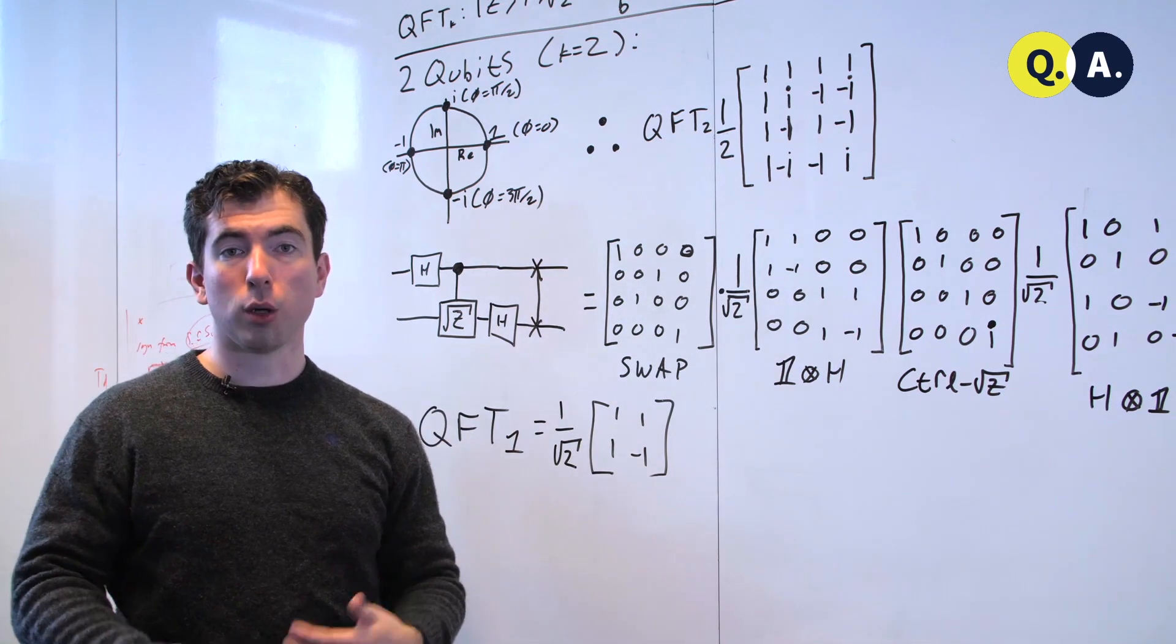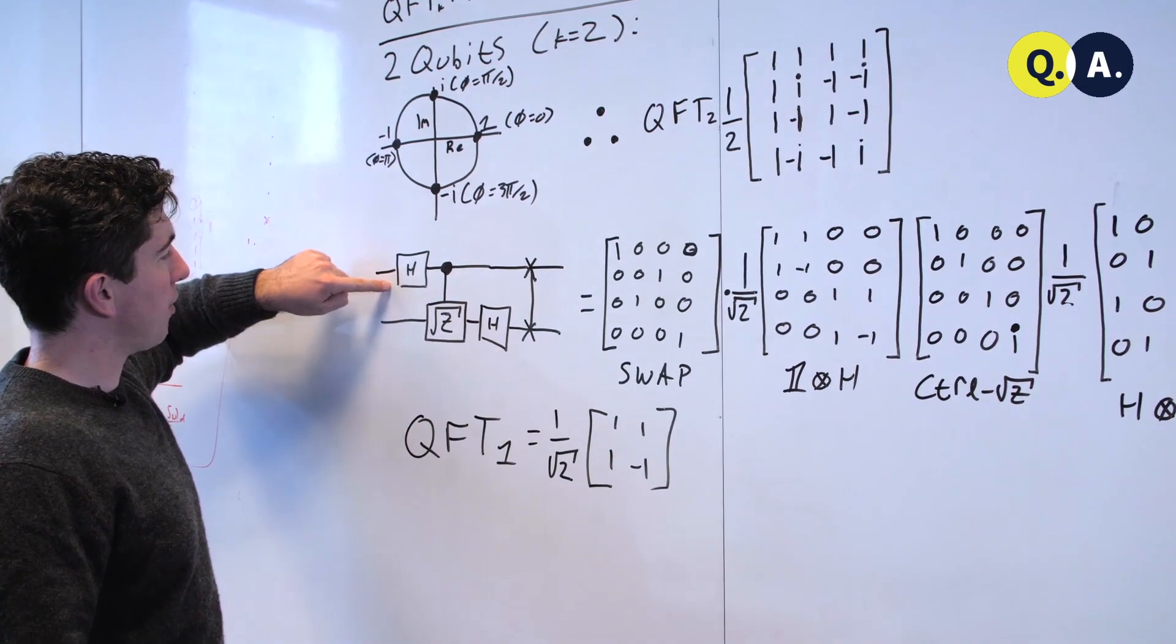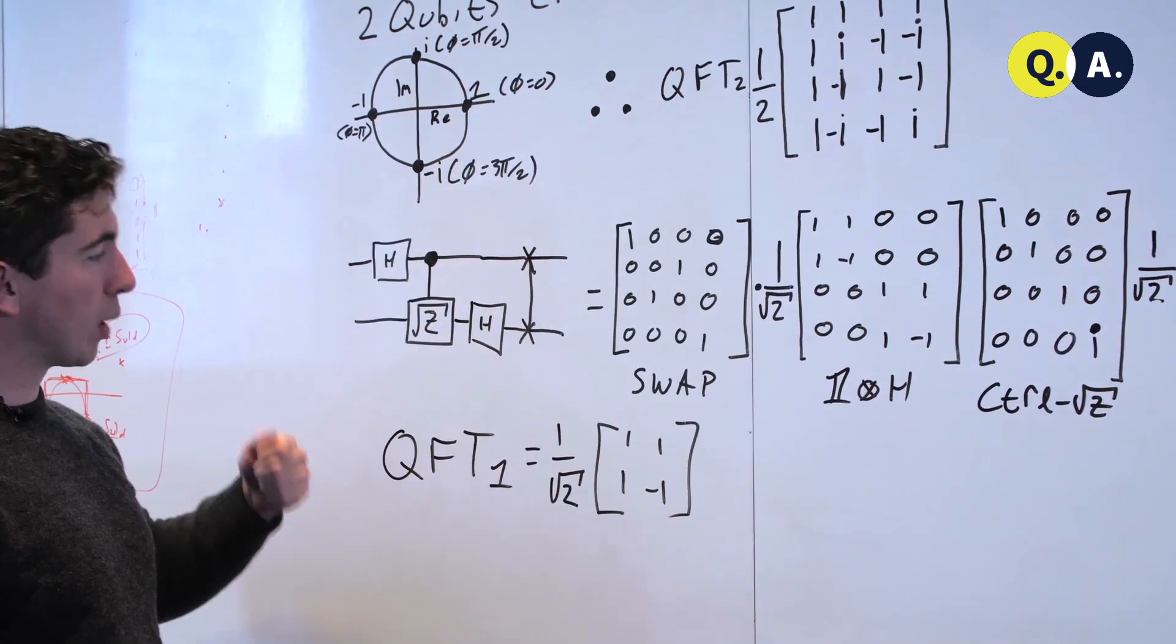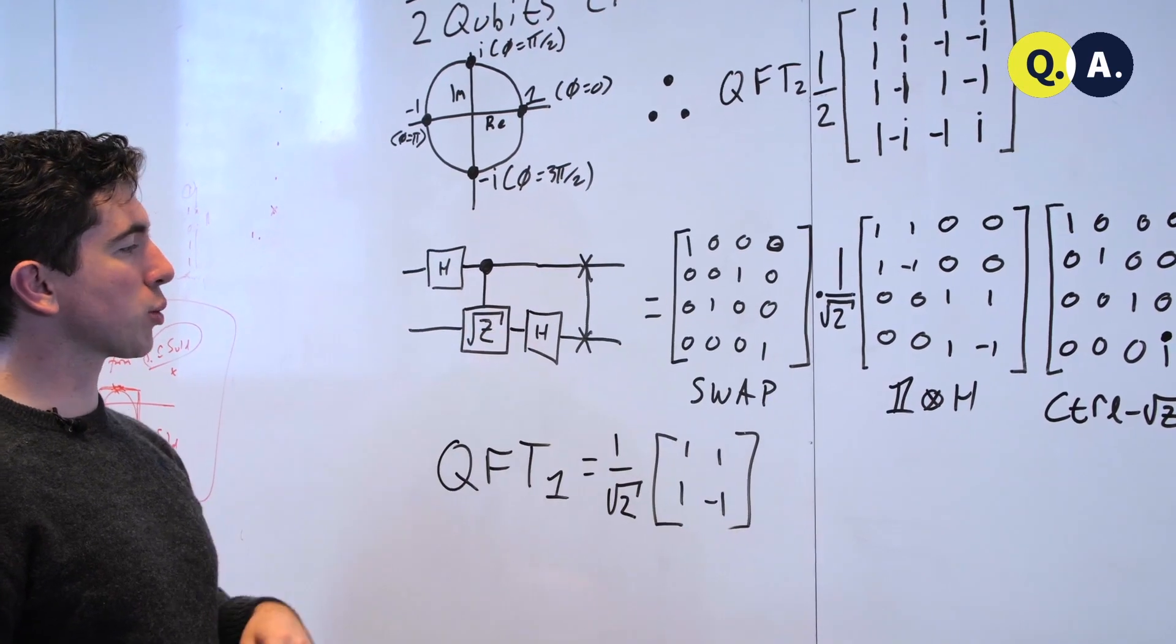Now we went over a little bit how to decompose this into a circuit, but I'll do it concretely here for you. We have a Hadamard gate, a controlled square root of Z, another Hadamard gate on the target qubit of the controlled square root of Z,